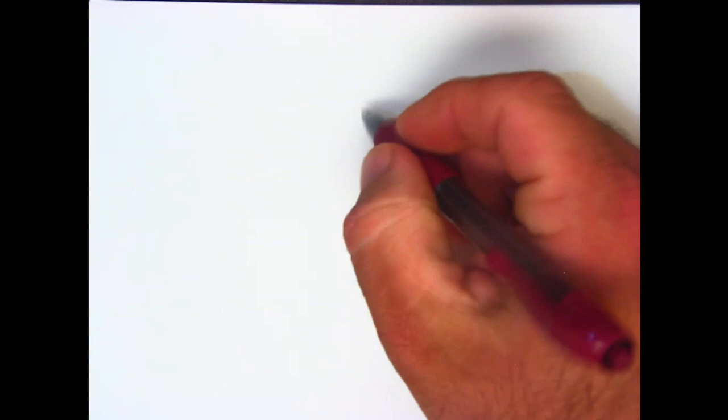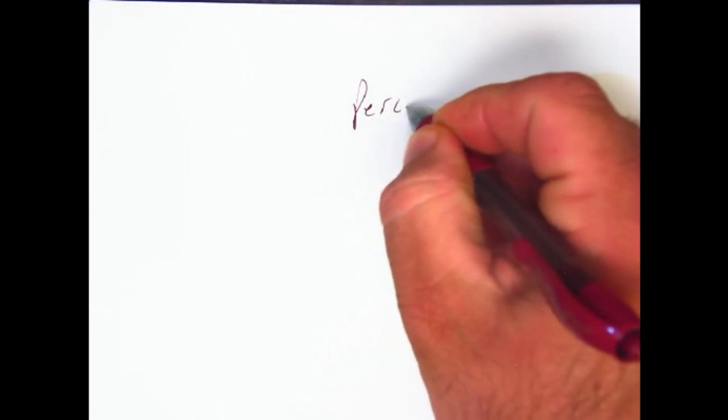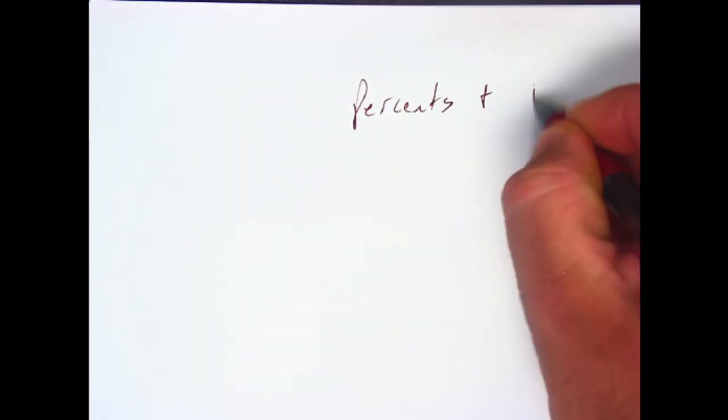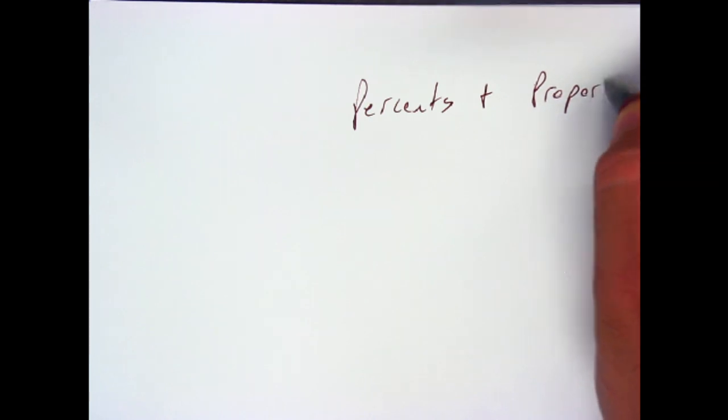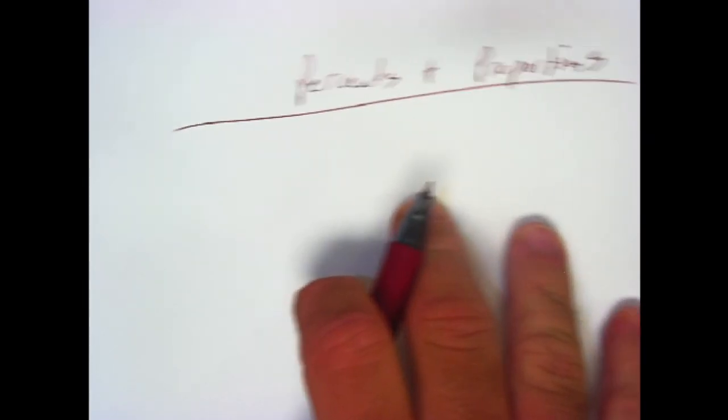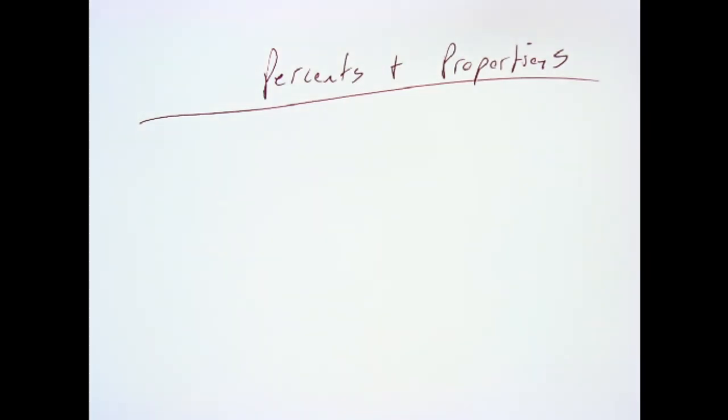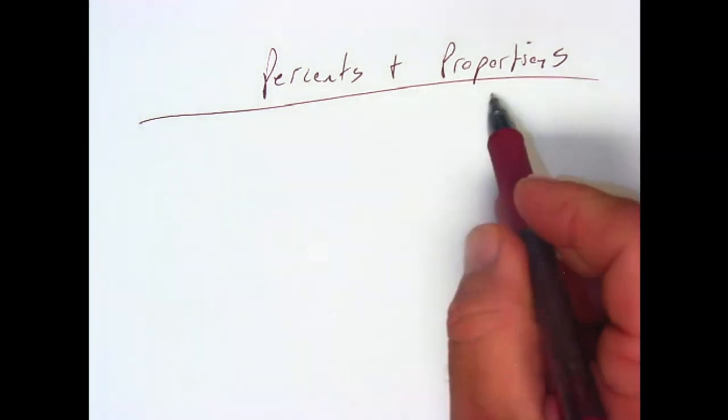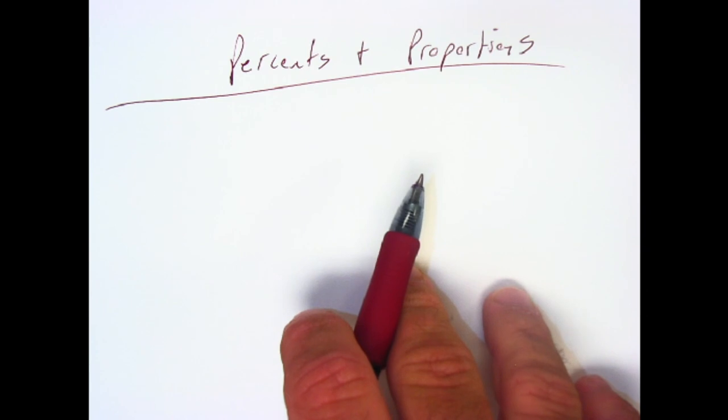Hello, Mr. Grimes here bringing you another video. This one is going to be talking about percents and proportions, and this is going to be a way for us to solve percent problems. Sometimes you're going to be asked things like 5 is what percent of 20 and we need a way to figure that out. There's two ways to do it: one of them is to write an equation and the other one is to write a proportion. We're going to start off with the proportion.